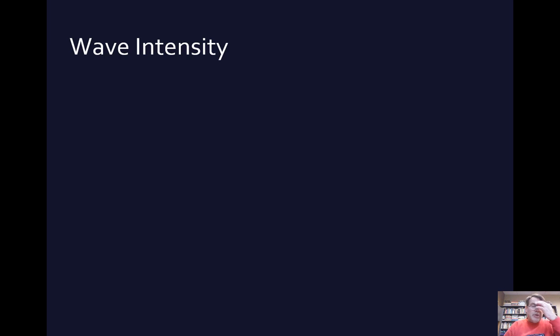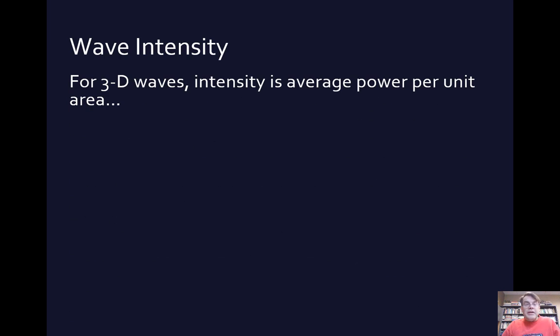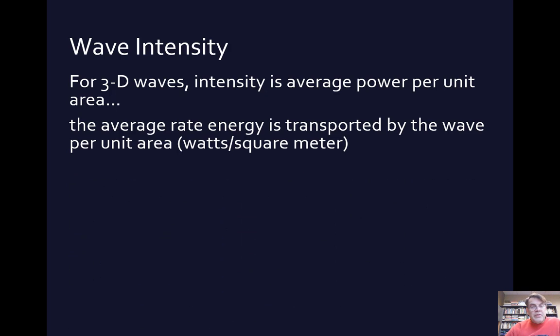Wave intensity is the other part of this section. So for 3D waves, intensity is the average power per unit area, the average amount of power per unit area. And this is the average rate that energy is transported by the wave per unit area. So what we find with this is, therefore, that the intensity of the wave is the power divided by the area, 4 pi r squared, for example, if it's moving in a circle, if it's moving out in a wave in a circle like that.